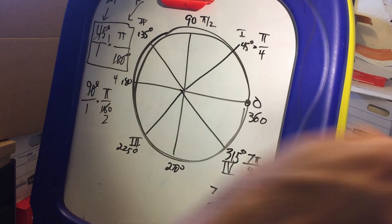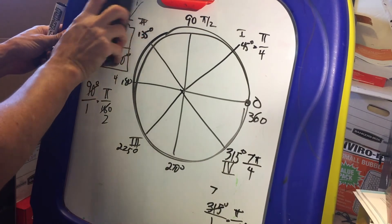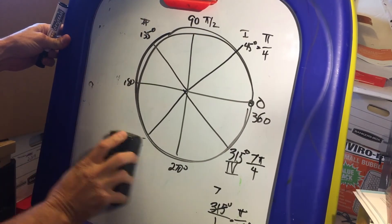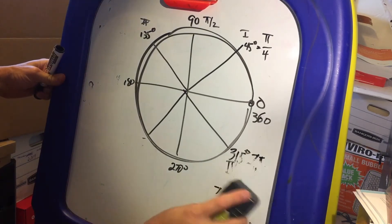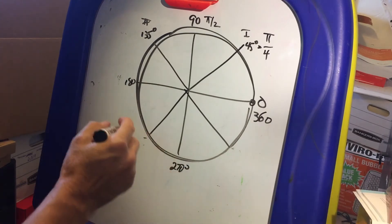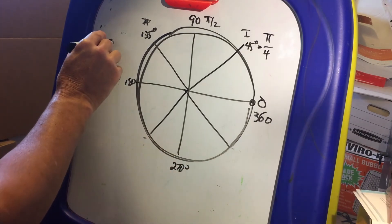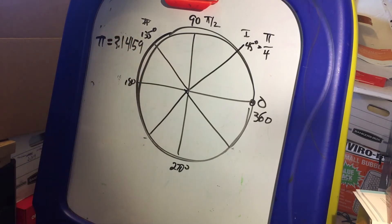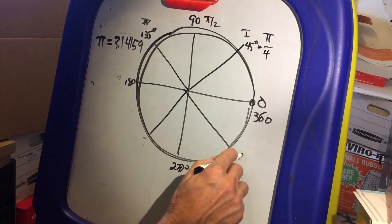Something you should know as well is that pi equals 3.14159... So typically, this was 315. Typically, we use pi.